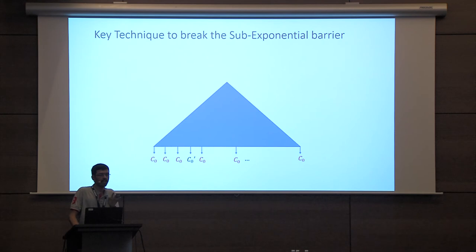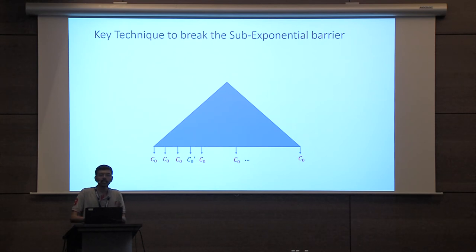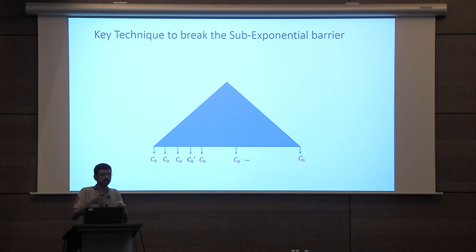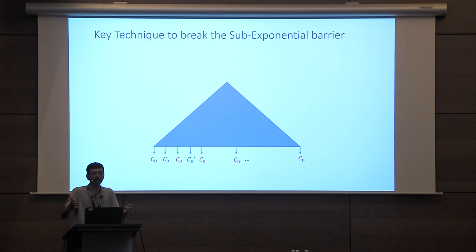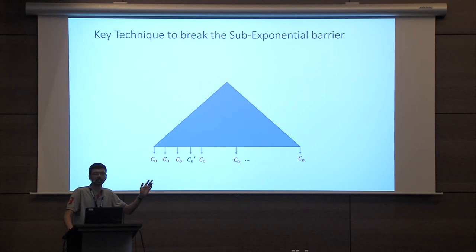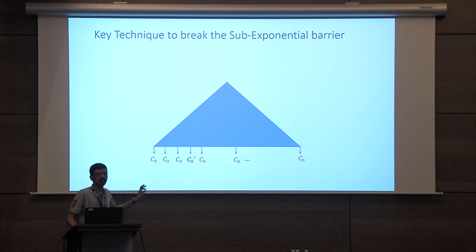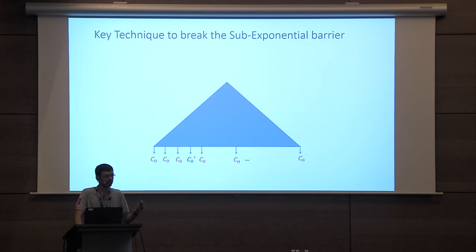This situation arises in the punctured programming approach of Sahai-Waters. In the punctured programming approach, we change from one circuit to another that has an additional if-statement: if the input is some hard-coded value, output some hard-wired value; on all other inputs, perform the same computation as the previous circuit. For such hybrid changes, we can realize the entire hybrid chain using only polynomial hardness of functional encryption.